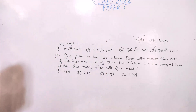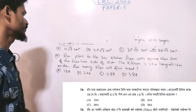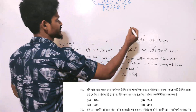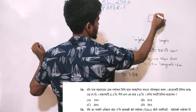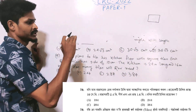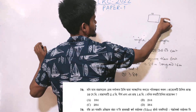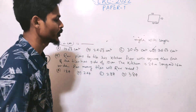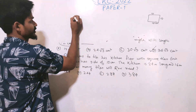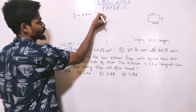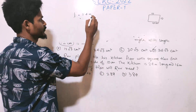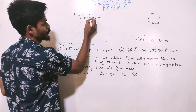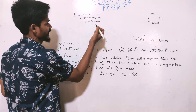Question 9: Robbie plans to tile his kitchen floor with square tiles, each of side 10 cm. The kitchen is 2.4 meters long and 1.6 meters wide. Converting: 2.4 meters equals 240 cm, and 1.6 meters equals 160 cm.